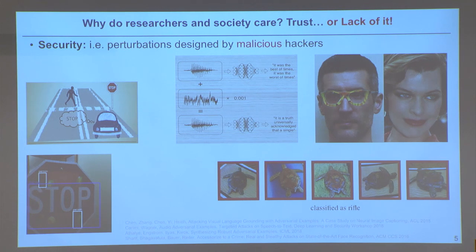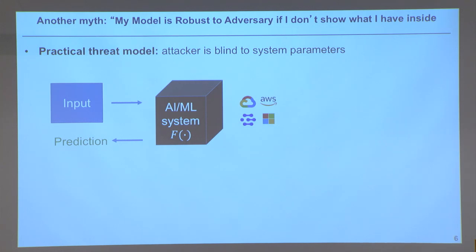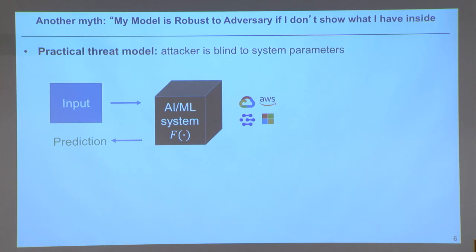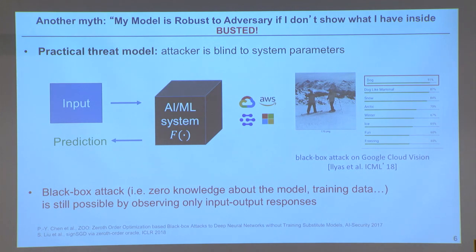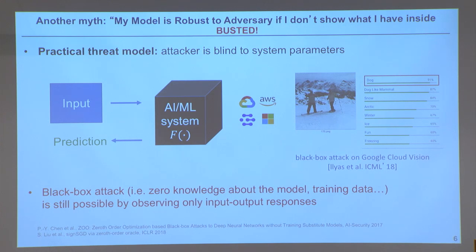Let me bust a few myths for you. Point number one: that hacker actually does not need complete information on the neural network — does not need to know anything at all about it. Some of my collaborators showed that you can treat the neural network as a black box, just ask questions and get answers, and that is enough to synthesize a deceptive picture. To me this image looks like two guys happily skiing in the mountains, but a deep neural network has a neuron corresponding to 'dog' firing at 91% — and they had no information about how that network was trained, what data set was used, what the coefficients or structure were.